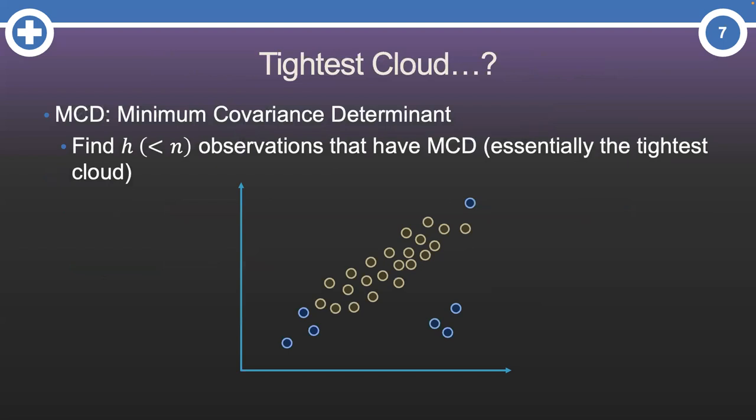Basically, we want this. We want the data that is the tightest part of the cloud. Those highlighted observations are what we want to calculate our ellipse with.